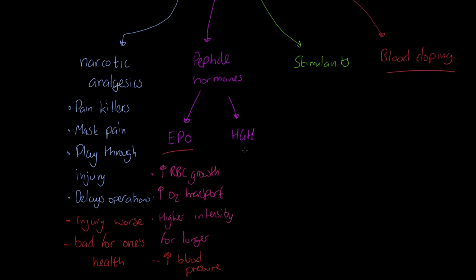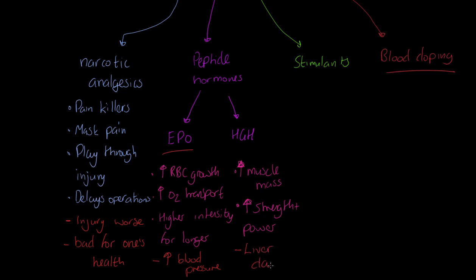HGH — human growth hormone — does what it says on the tin. It increases muscle mass, not dissimilar to steroids. It will also increase bone growth, especially in younger people. It also gives an increase in strength and power, making it attractive to a strong forward in basketball, a weightlifter, or a rugby forward. However, there are negatives: HGH is considered to cause chronic liver damage, equivalent to that caused by alcoholism — really quite serious.